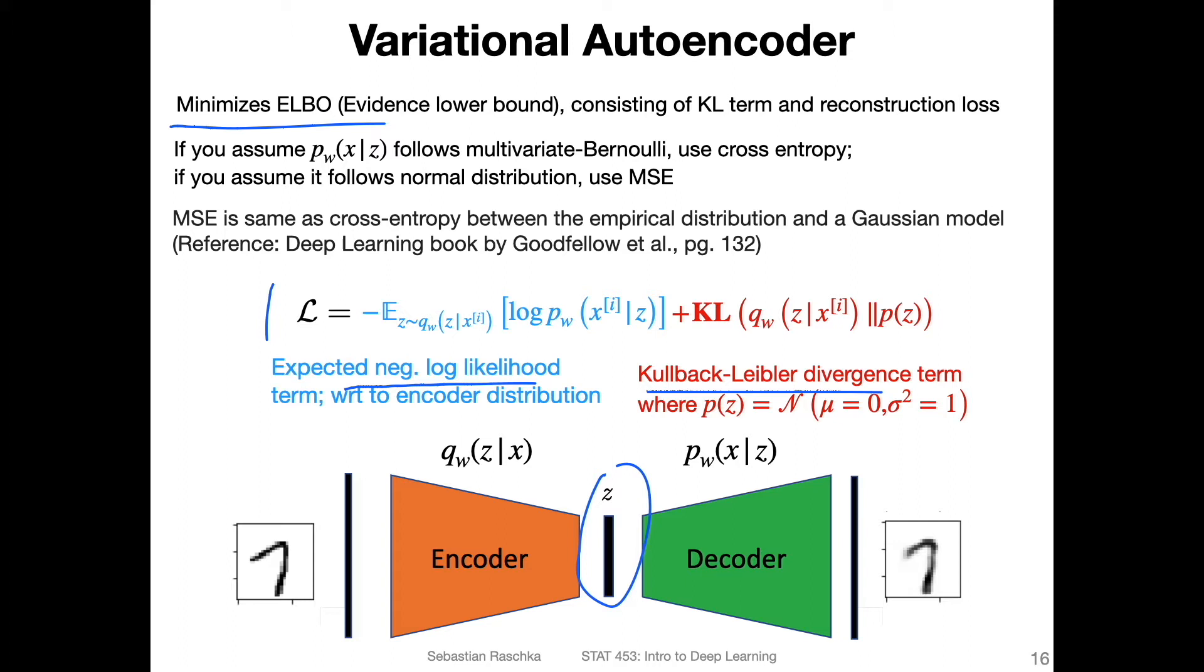So technically, you would be maximizing the log likelihood of the data. But as we discussed before, when we talked about logistic regression a long time ago, maximizing the log likelihood is the same as minimizing the negative log likelihood. So that's why I've written it like this with this negative sign here.